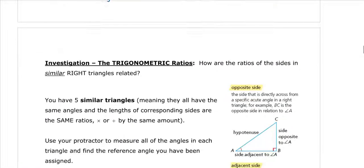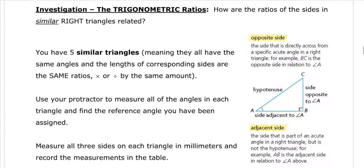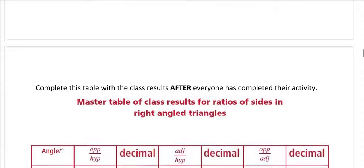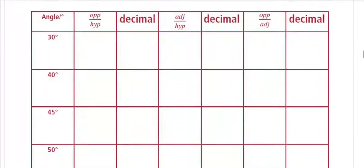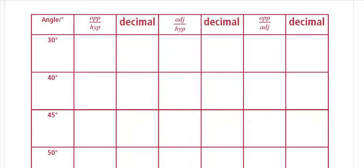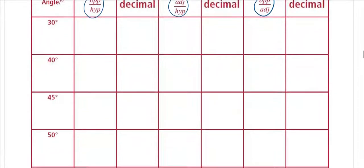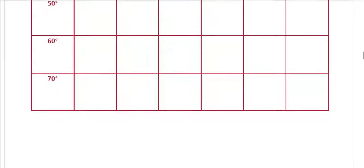I'm going to be doing an investigation next in class where I'll give you some similar triangles, and you're going to be labeling the adjacent, hypotenuse, and opposite and making some measurements. At the end of the activity, we're going to make a master table of some calculations of ratios: opposite over hypotenuse, adjacent over hypotenuse, and opposite over adjacent. You'll see something surprising. And that ends this video.